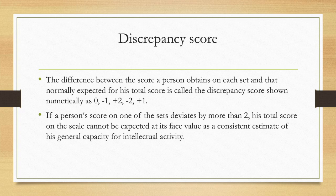If a person's score on any of these sets deviates by more than 2, if it is more than plus 2 or minus 2, then his total score on the scale cannot be expected on its face value as a consistent estimate of his general capacity or intellectual ability and needs to be taken with a pinch of salt.